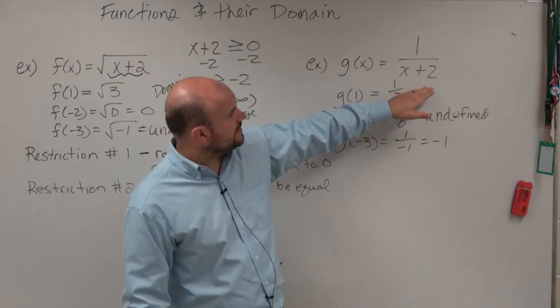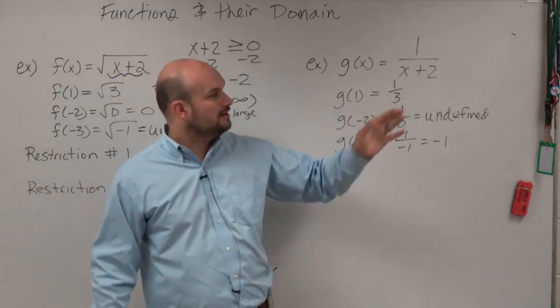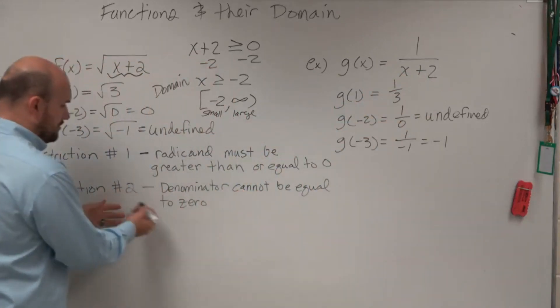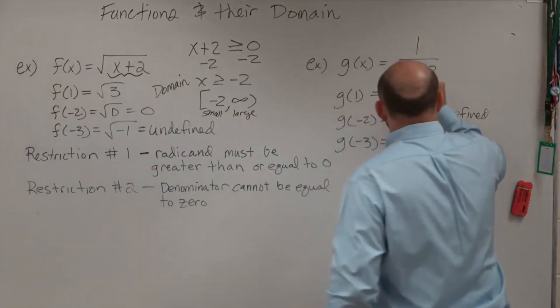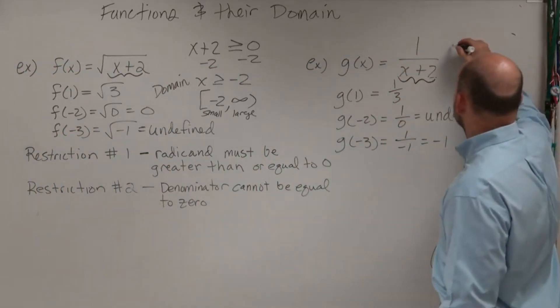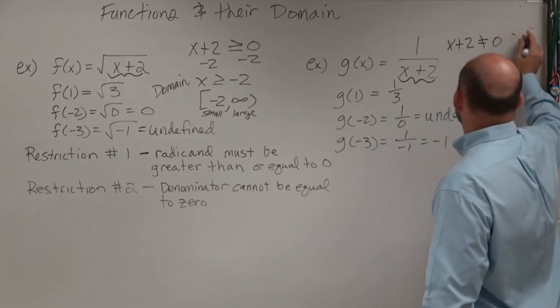When you look at this one, we see we have a denominator. There's no radicals, but we have a denominator. What do we know about denominators and restriction number two? Our denominator cannot equal zero. What is our denominator in this case? x plus two. So we're going to say x plus two cannot equal zero.